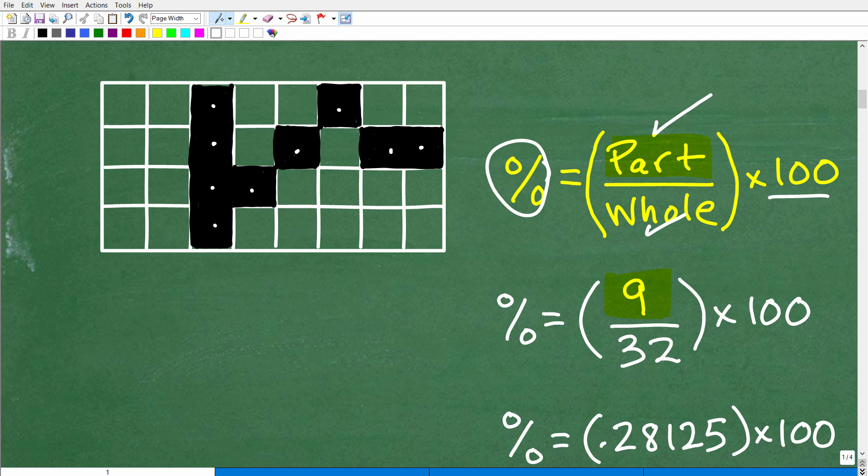And then how many total boxes do we have? Well, we have 1, 2, 3, 4, 5, 6, 7, 8. So we can take this 8, multiply by 1, 2, 3, 4. So that is 32. Okay, so we have 32. That's our whole. Our part is 9.